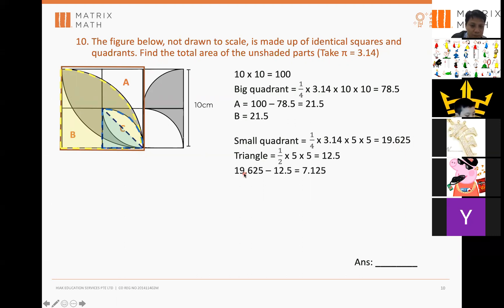So, if I use 19.625, which is the small quadrant, I subtract the area of the triangle, I get 7.125. Where is 7.125? This is 7.125. Which is half a pattern.